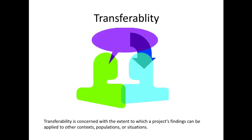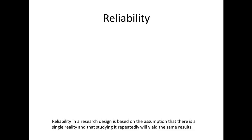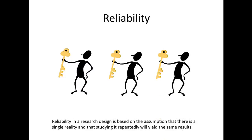Transferability is concerned with the extent to which a project's findings can be applied to other contexts, populations, or situations. Reliability in research design is based on the assumption that there is a single reality and that studying it repeatedly will yield the same results. You'll see these terms, and as you can see, credibility and reliability have slightly different meanings.